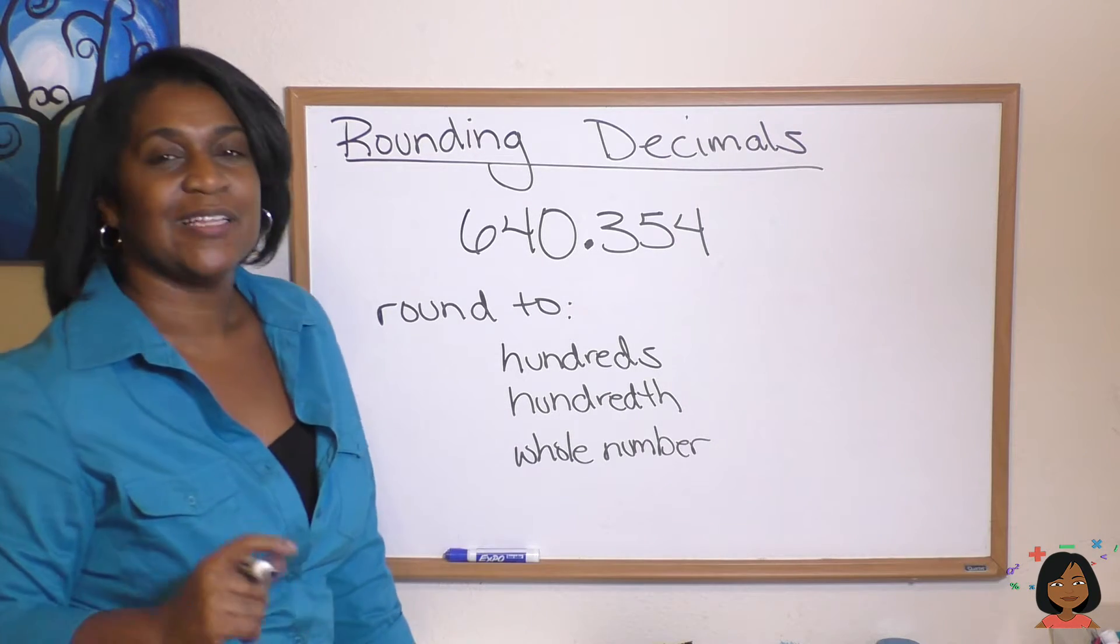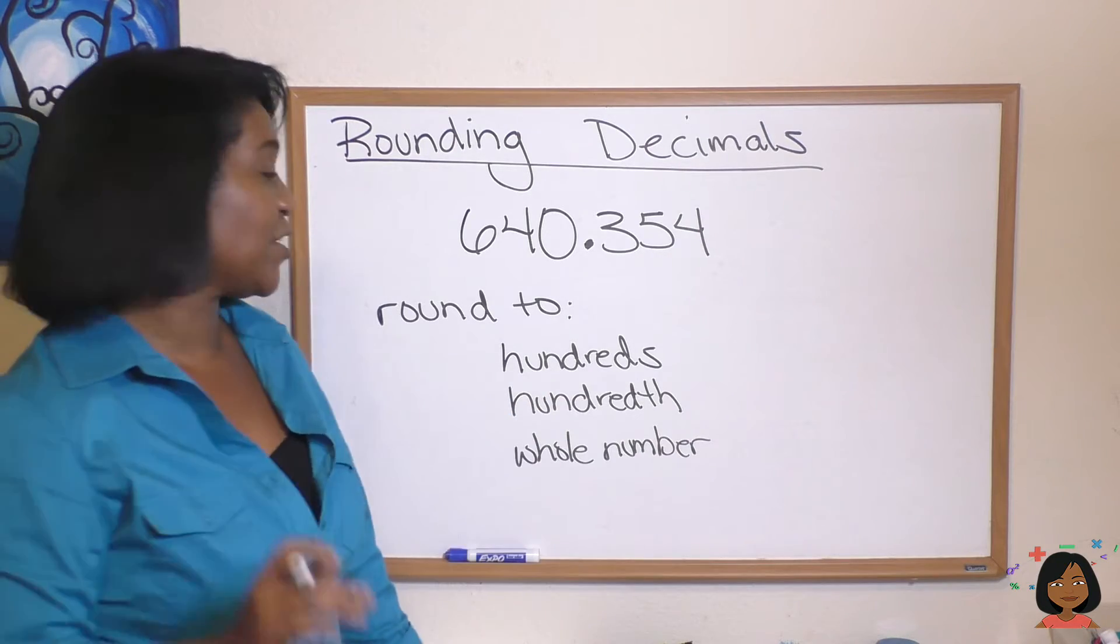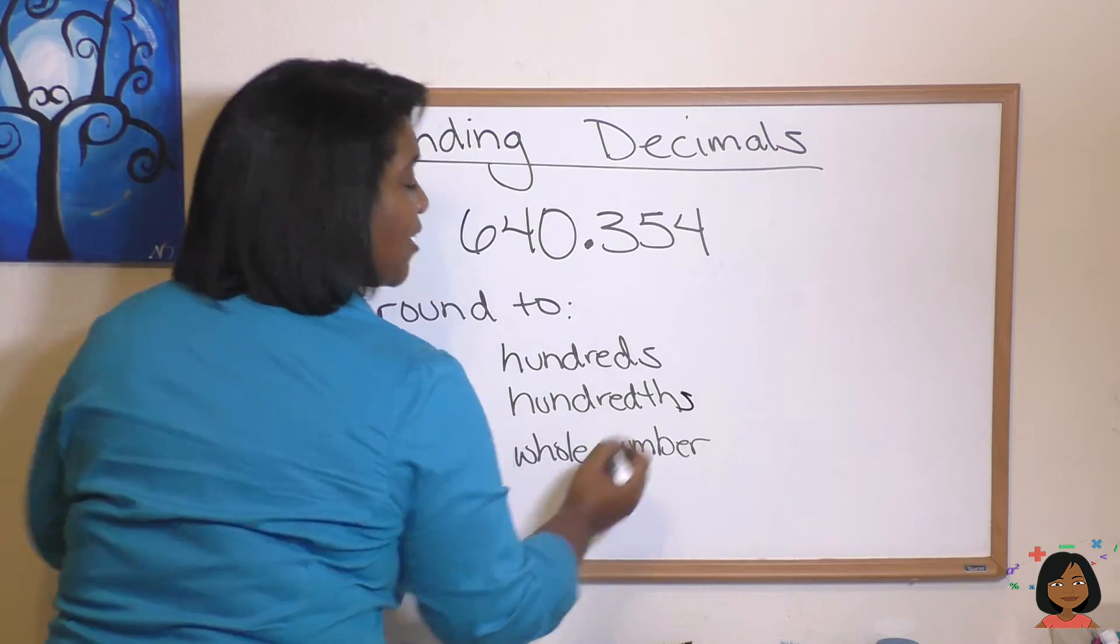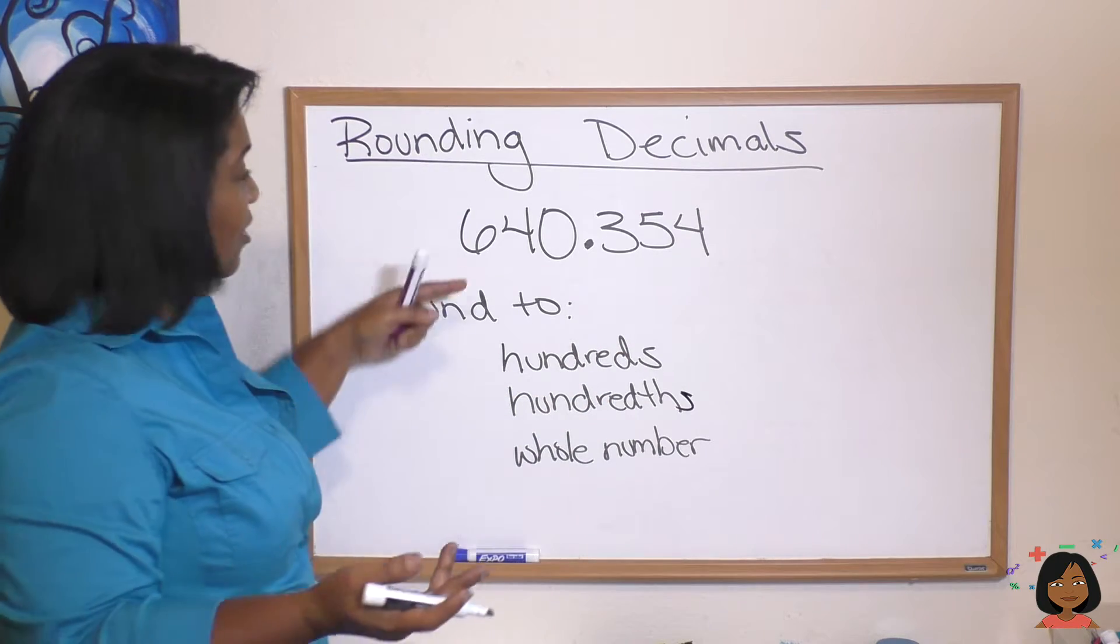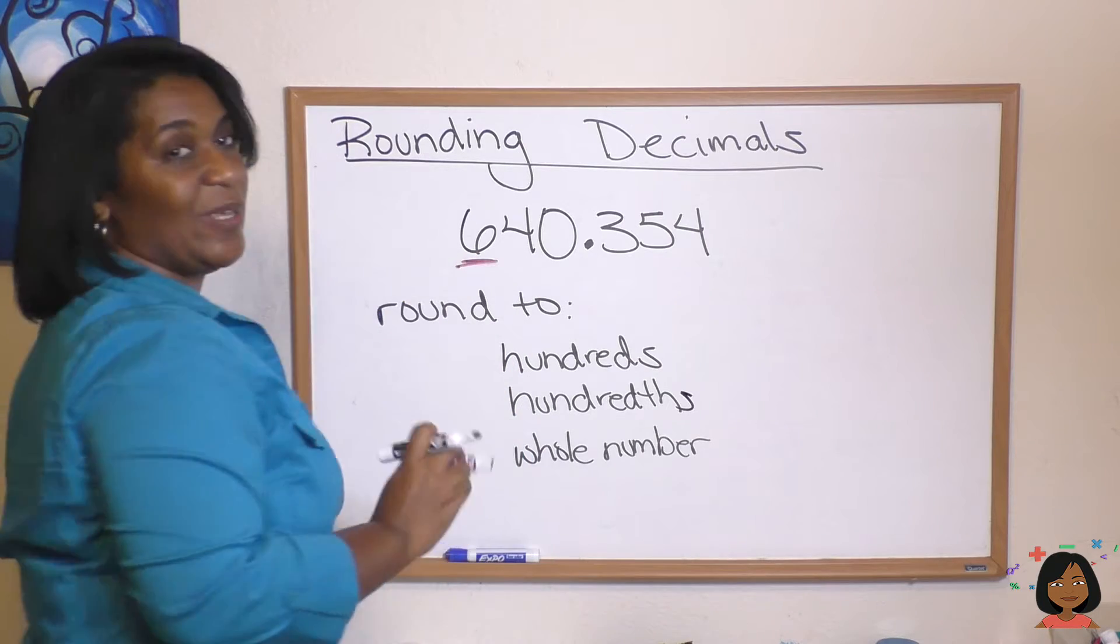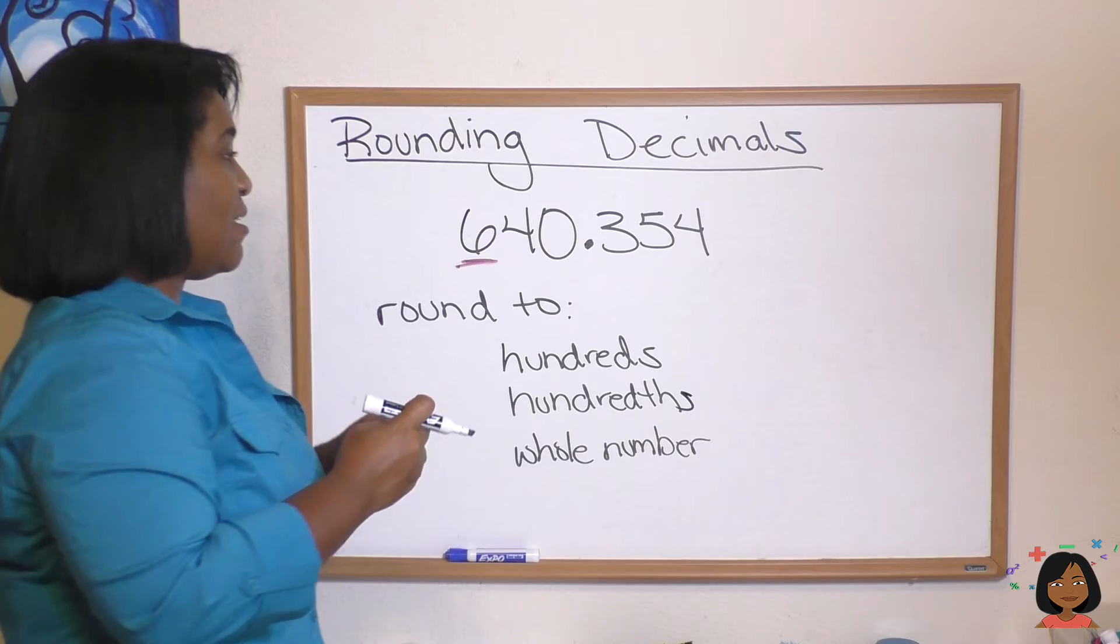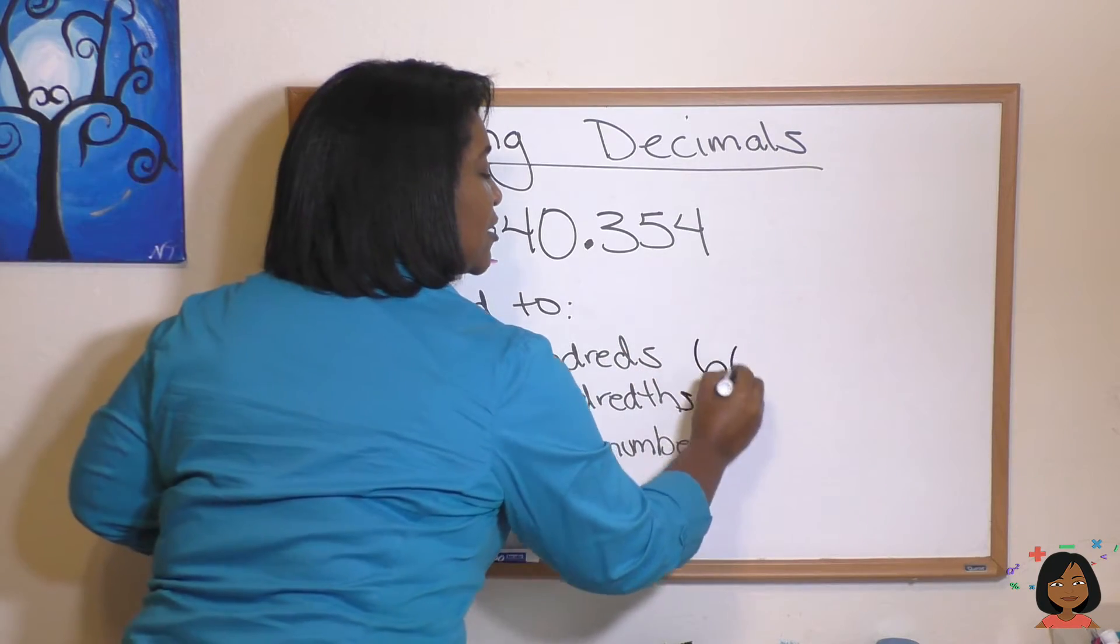Let's start with the first one. Let's round this number to the hundreds. Now because there's no th on the end, I'm going to put my s there, no th on the end in hundreds, we're talking about this hundreds. So I'm going to highlight my 6, and again we look to the right, we see it's a 4, which means we get to keep our 6. So this will go to 600.